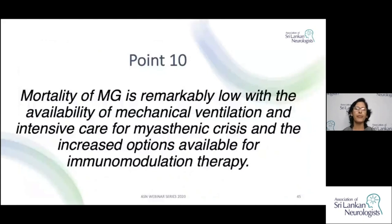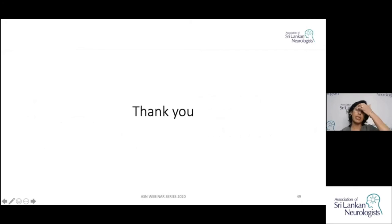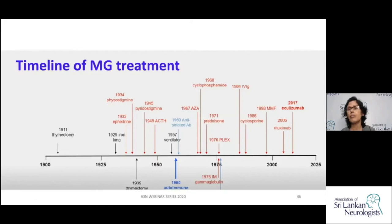Point ten: mortality of Myasthenia Gravis is remarkably low with the availability of mechanical ventilation, intensive care for myasthenic crisis, and increased options for immunomodulation therapy. Myasthenia was recognized in the 18th century; thymectomy was introduced in the early 20th century; the iron lung and assisted ventilation came in the 1950s; immunosuppression was introduced in 1971; and now we have monoclonal antibodies. Nowadays, if a person is in respiratory failure with Myasthenia Gravis, one must assume either the patient has defaulted treatment or has been mismanaged.